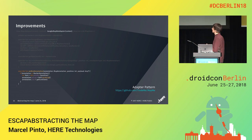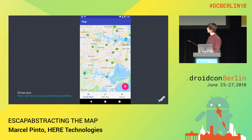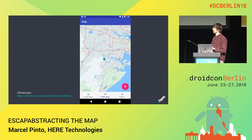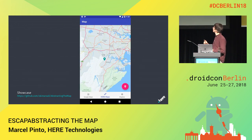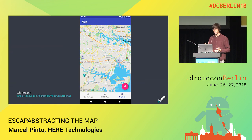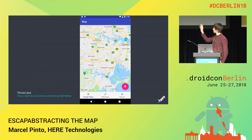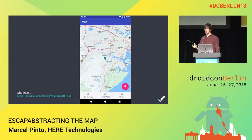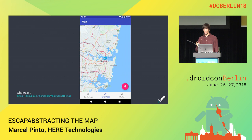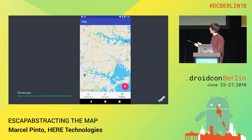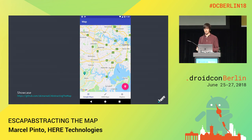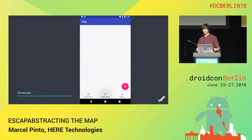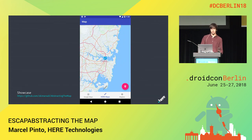I created an example showcase and open sourced it. It's really basic — it has two repositories delivering fake data, one for places and one for search. Then we have the ViewModel and the adapters for each of the map providers: Google Maps, HERE Maps, and Mapbox. The only difference in the code is in the adapter — all the rest of the application is the same code. So we are able to switch between different providers really easily. This can be really beneficial, not only for clean code, but also when you try to publish things on the Amazon App Store, which was not allowing Google Maps.